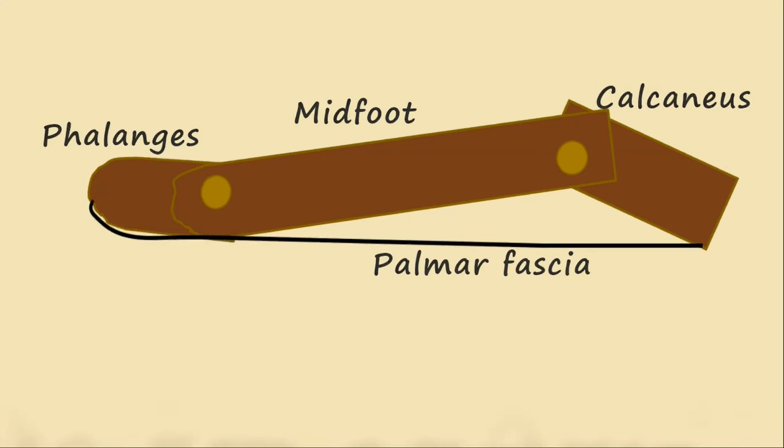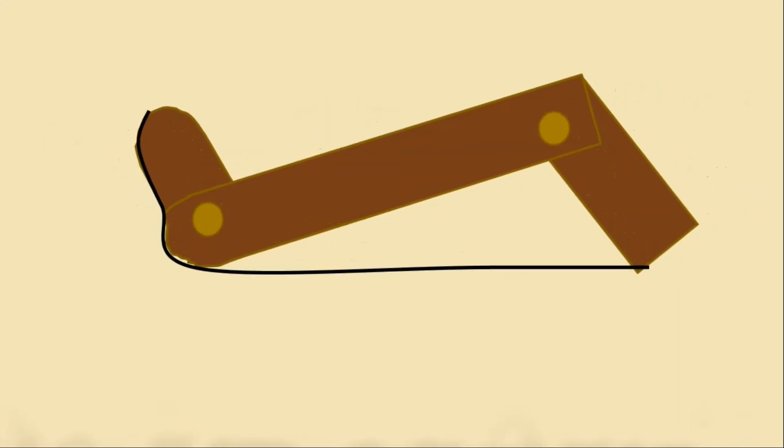But when pressure is put onto the foot, for example during running, the plantar fascia becomes stretched and taut and begins to store elastic potential energy. This first raises the arch of the foot and makes it become more rigid, allowing the many bones to work together as one.